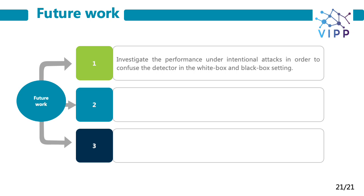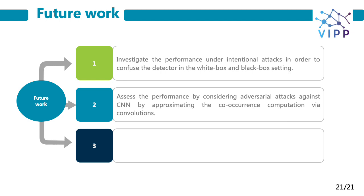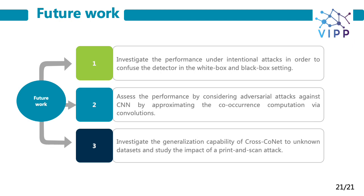Future research will be devoted to investigating the performance of Cross-CoNet under intentional attacks, purposely modifying the band relationships in order to confuse the detector, both in white-box and black-box settings. It would be interesting to assess the network's performance against an informed attacker who runs adversarial examples by approximating the co-occurrence computation via convolutions. Additionally, since prior work has shown CNN-based image manipulation detectors are vulnerable to rebroadcast attacks, it would also be interesting to study the performance of Cross-CoNet and CoNet when facing a print-and-scan attack. Thank you for your attention.